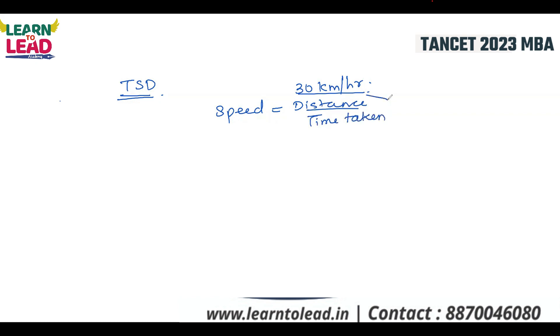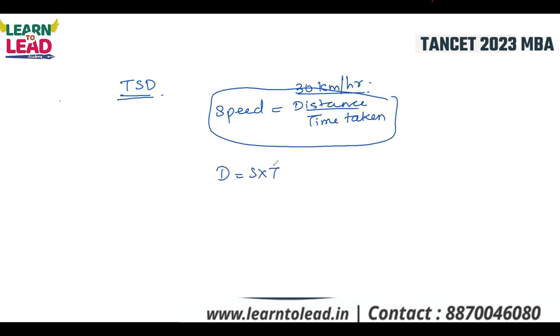It is the basic formula. In the formula for this type of question: distance is speed into time taken, and time taken is distance divided by speed.